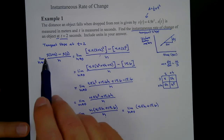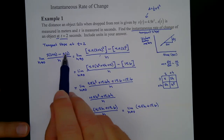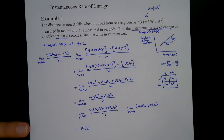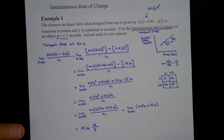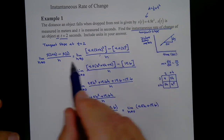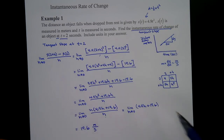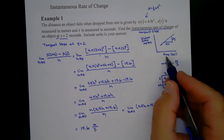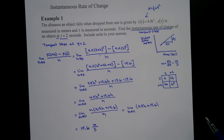The answer is 19.6. As for the units, we backtrack: s(t) is in meters, and t is in seconds, so the units for slope are meters per second. The h represents a horizontal unit and the horizontal units are in seconds, giving us meters per second.